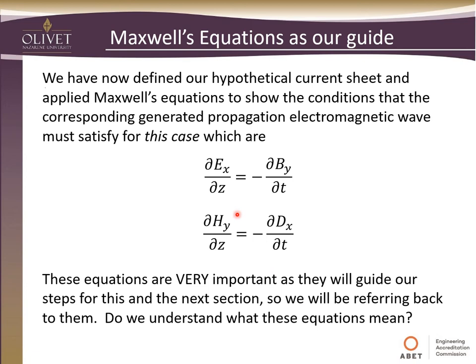Please make sure you understand what these equations mean. The electric field is varying at the Z position as the magnetic field varies in time. Likewise, the magnetic field in the Y direction varies according to Z as the displacement vector varies with time. The displacement vector is related to the electric field by the permittivity, and the magnetic field is related to the magnetic flux density by the permeability. We'll be utilizing that in a few slides — so keep that in mind.